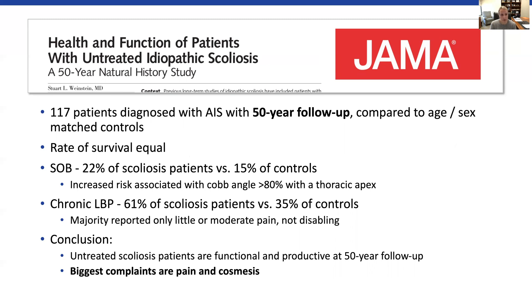They did find a small increase in shortness of breath amongst the patients with scoliosis versus the controls. However, this risk was mostly associated with curves greater than 80 degrees located in the thoracic spine. They also noted an increase in chronic low back pain in patients with scoliosis, but the patients who reported back pain reported that it was little or moderate, not disabling, and did not keep them from having an excellent quality of life. In conclusion, untreated scoliosis patients can live a functional and productive life at 50 years of follow-up, with their biggest complaints being pain and the cosmetic appearance of their deformity. Unless their curves are extremely large — 80 to 90 degrees or more — they really are not having significant cardiopulmonary compromise or excruciating disabling pain.